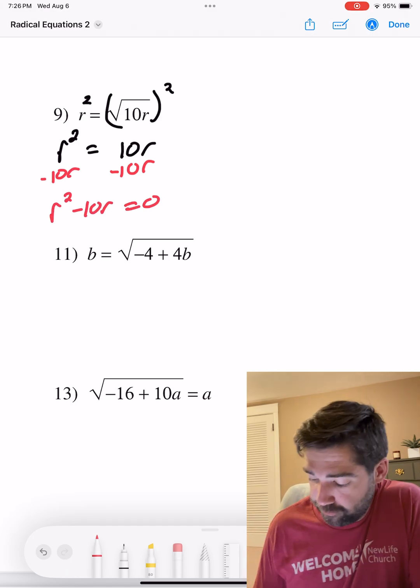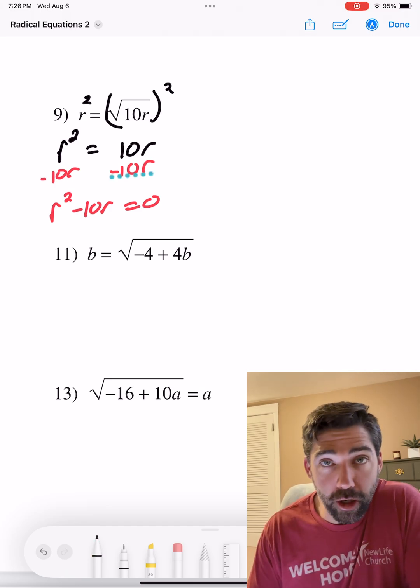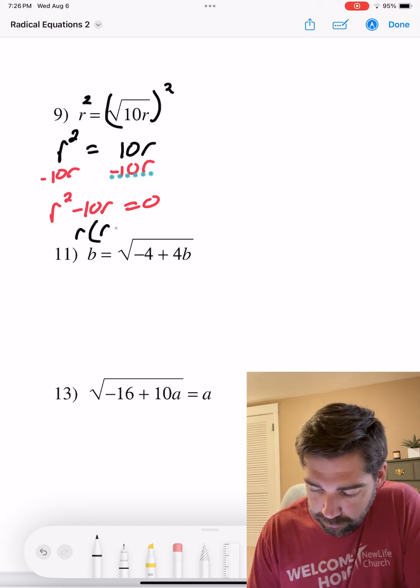Now do a greatest common factor. There's an r in both of these terms. So we can pull out an r and I'm left with r minus 10. That equals zero.